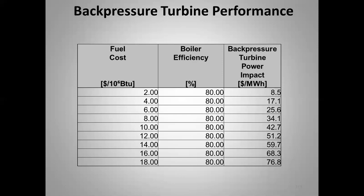At $2/MMBTU, the cost is $8.50 per megawatt-hour — that's only $0.0085 per kilowatt-hour, less than one penny. A plant might pay 6 cents per kWh, or $60 per MWh. So with good fuel prices, there's a strong economic case for generating your own electricity — that's what this analysis is about.